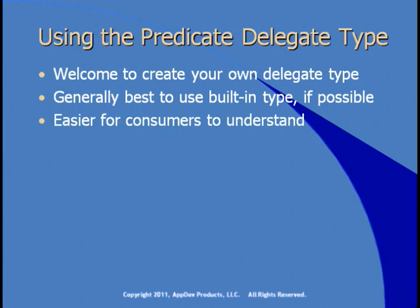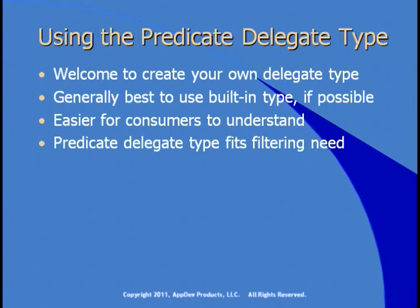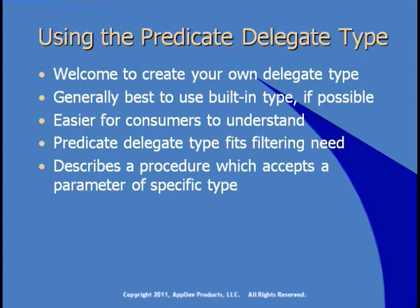These are well-known delegate types, documented in the .NET framework, and anyone can use them. In our case, the Predicate delegate type fits our filtering need. The Predicate type is a built-in generic delegate that accepts any kind of object and returns a Boolean value back. Its purpose is to do exactly what our FileFilterDelegate did — it describes a procedure which accepts a parameter of a specific type and returns a Boolean back. Let's look at our example modified to use an instance of the Predicate delegate type.